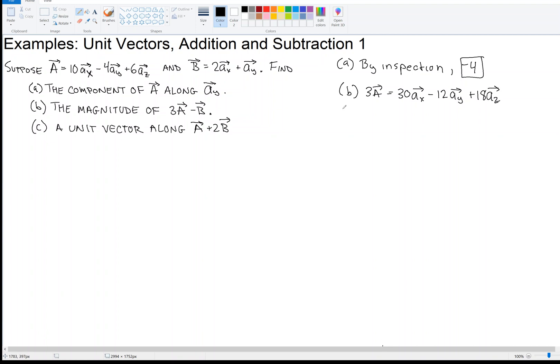And then we need to subtract that from B. So 3A minus B. So I've got 30 in the X direction, then minus 2 in the X direction. So that becomes 28 in the X direction. And then for the Y direction, I've got minus 12 and then minus 1. So that becomes minus 13 times this unit vector in the Y direction.